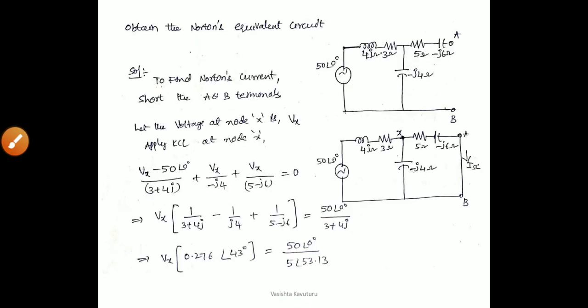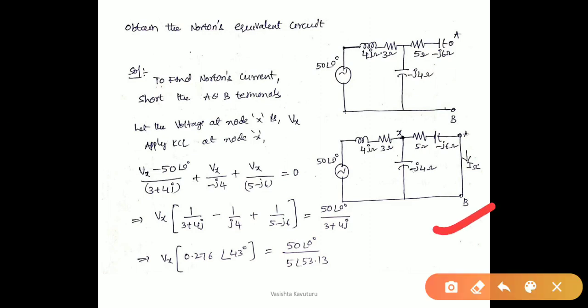Second problem: obtain the Norton's equivalent circuit at the terminals A and B. Here there is no load given in the problem — he just asked to find the Norton's equivalent circuit. Norton's equivalent circuit consists of Norton's current and Norton's impedance, since it is an AC circuit. To find the Norton's current first, we have to short circuit the two terminals A and B, and the equivalent circuit is shown in the figure.